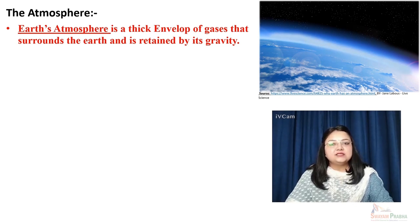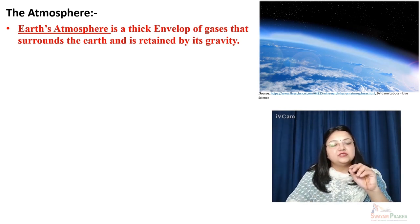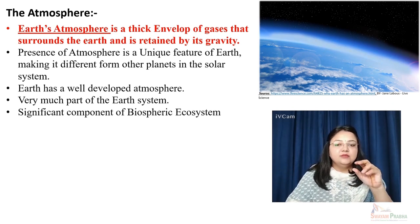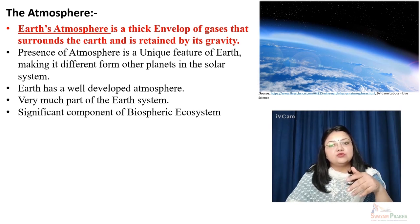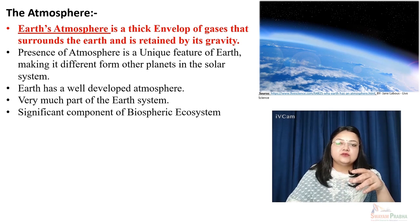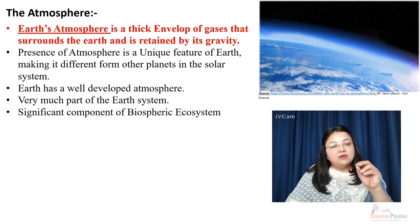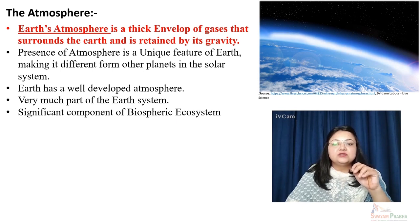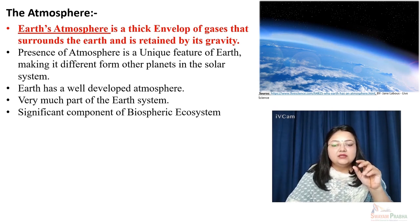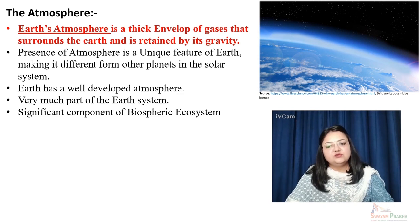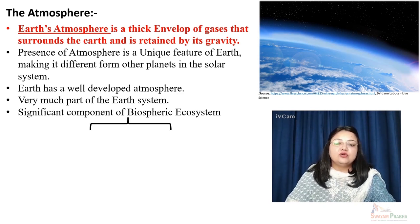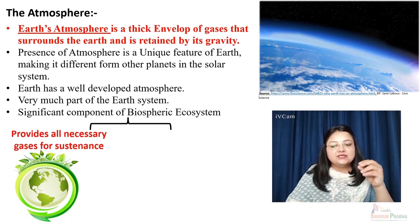Atmosphere is very much unique to our planet earth. It is a thick envelope of gases that surrounds earth from all sides, and it is attached to earth because of its gravitational pull. It is very much part of the earth system. This unique feature — the presence, type, and composition of atmosphere — makes the planet habitable and makes it unique from all other planets in the solar system, because it is only earth which has life, and the composition of atmosphere plays a very significant role in making that life possible.